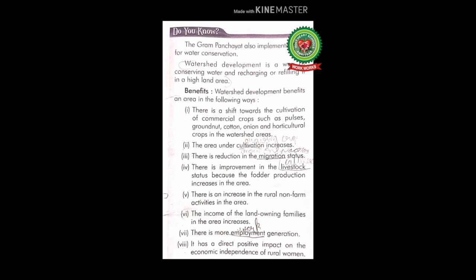The Gram Panchayat also implements plans for water conservation. Conservation means to save water, so the Gram Panchayat implements plans to save water. Here I am going to discuss a plan called watershed development. Watershed means an area that separates waters flowing to different rivers. Watershed development is a way of conserving water and recharging or refilling it in a highland area.